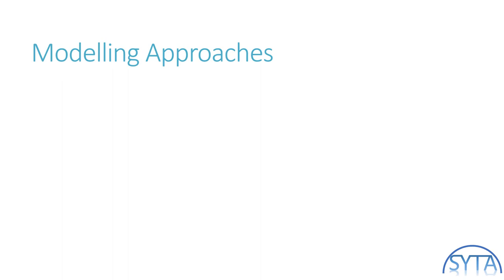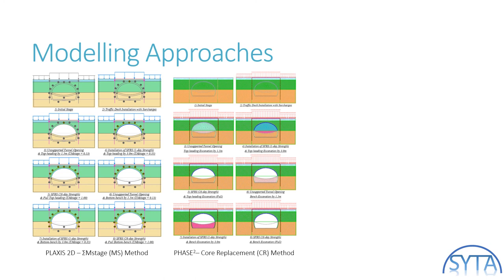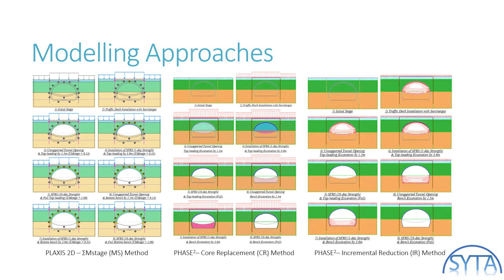Now that we know the unsupported tunnel displacement is 9 mm with a 1.5 meter excavation length, we can draw a vertical line in the GRCs generated before and obtain the ground relaxation ratios. For the purpose of further analysis, a unified value of 0.13 is adopted for the ground relaxation ratio for 1.5 meter excavation. With this equivalent ground relaxation ratio, we can finally make 2D models for tunnel excavation with pre-installed horizontal pipe piles. The three approaches for Plaxis 2D and Phase2 will be applied to simulate the full excavation works. The modeling stages are the same for Plaxis 2D MS method, Phase2 CR method, and Phase2 IR method: initial stage, traffic deck installation, unsupported top heading by 1.5 meters, top heading by 3 meters with temporary lining at 1-day strength, breakthrough of top heading with temporary lining at full strength, and three steps repeating for the bottom bench.